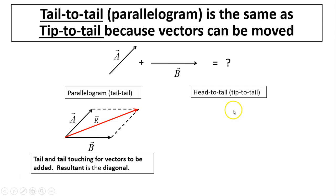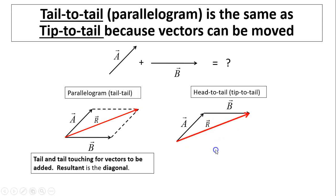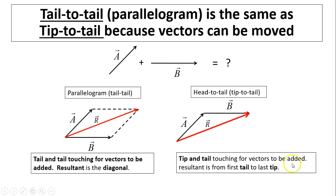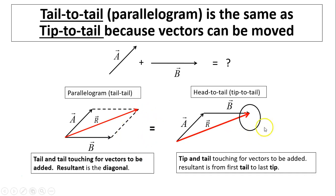If we do head-to-tail or tip-to-tail, we draw vector a first, then we draw vector b at the tip of a continuously. The resultant is from the tail of a to the tip of b. So tip and tail touch for vectors to be added, and the resultant is the first tail to the last tip. In the head-to-tail method, the resultant is always the arrow connecting together. As you can see, these two r's have the same magnitude and same direction, so it really doesn't matter which way you add them — they are equivalent.